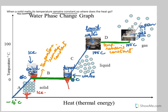This whole graph can be divided into two types of areas. The blue area shows a rise in temperature but no change in state. The green area shows a change in state from solid to liquid but no rise in temperature. From C to D there is a rise in temperature but no change in state, and from D to E there is a change in state but no rise in temperature.